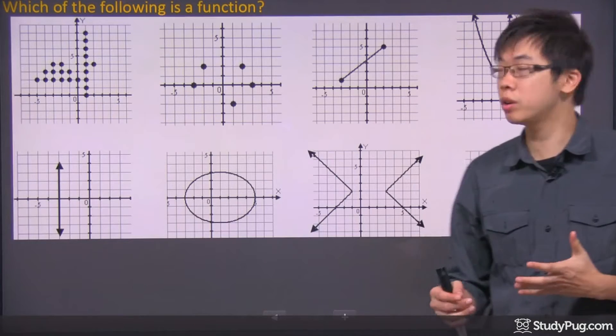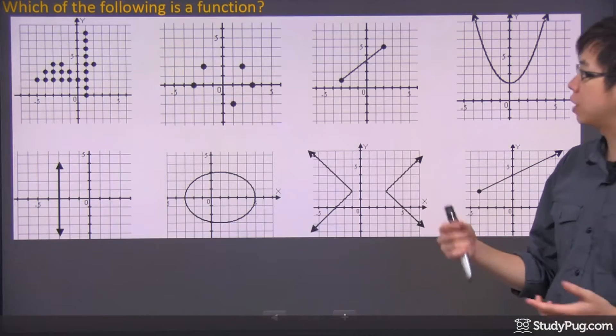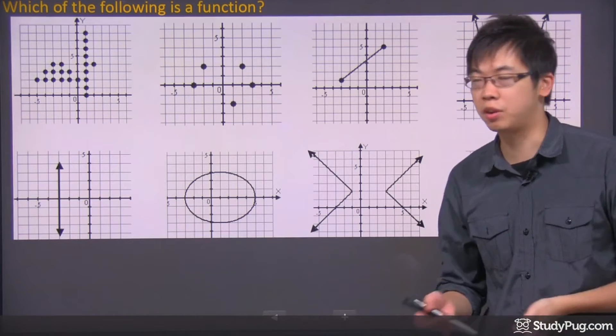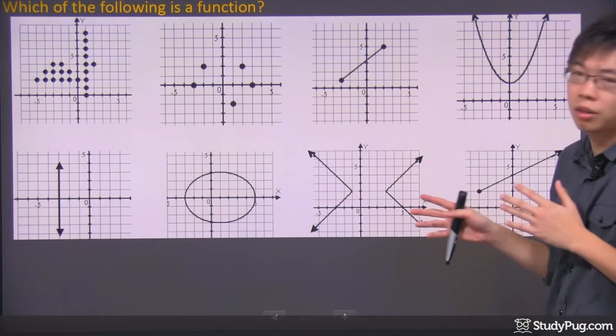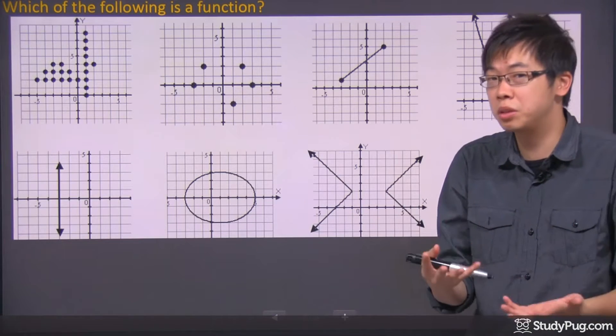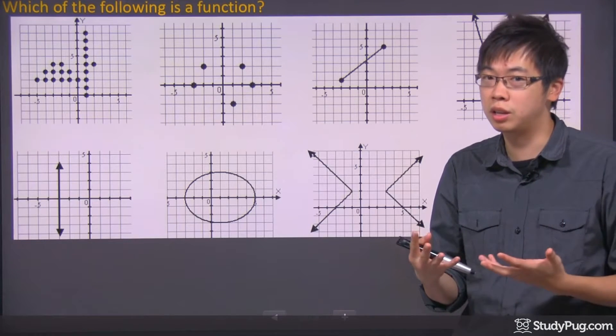Hi, welcome to this question right here. We're given 1, 2, 3, 4, 5, 6, 7, 8 graphs. It's something that I pulled from the internet which defines a function. This is a little exercise to see if you know how to use your vertical line test really efficiently.